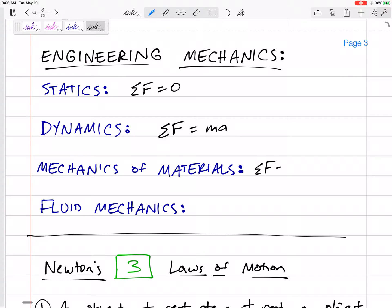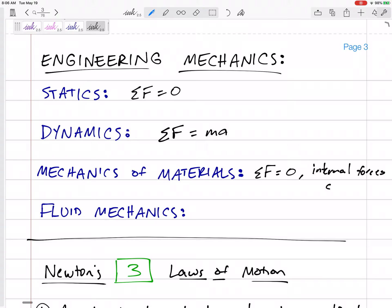And mechanics of materials, we go back, the sum of the forces will be equal to zero, but then we look at the inside of the beam. What do those forces cause on the beam? We look at internal forces, internal stresses, and then the strain that those cause.